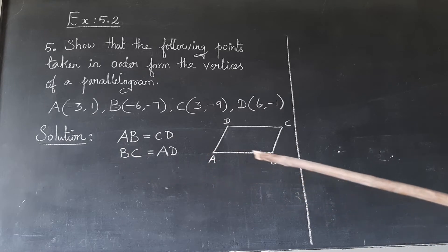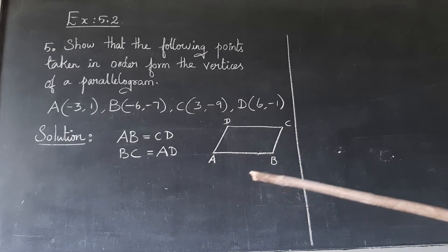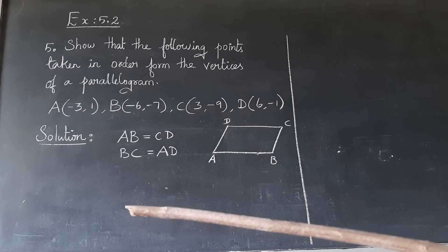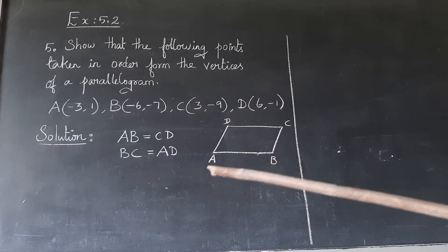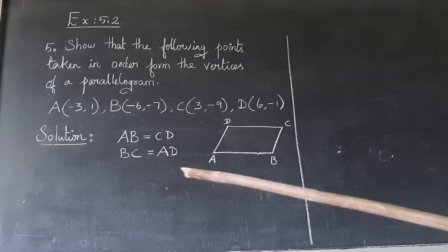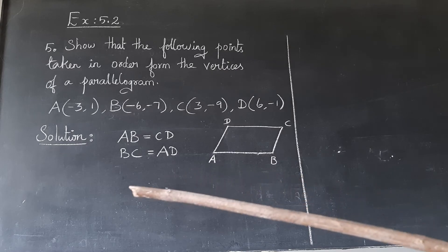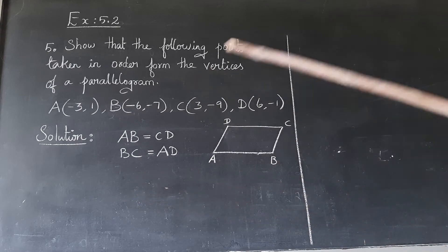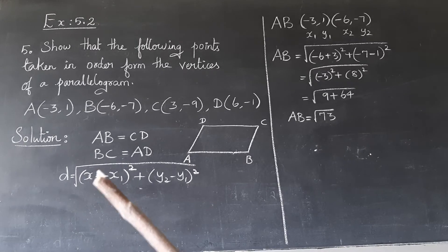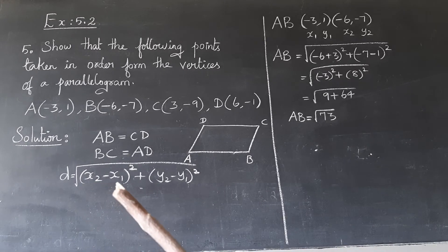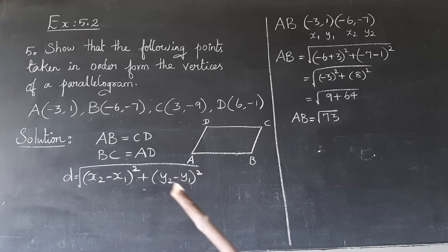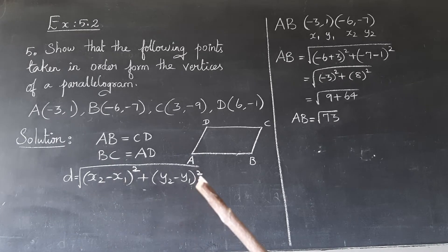First, we will use the distance formula. When we have two points, we use the distance formula. The distance formula is: D equals the square root of (x2 minus x1) whole square plus (y2 minus y1) whole square. So that is our distance formula.